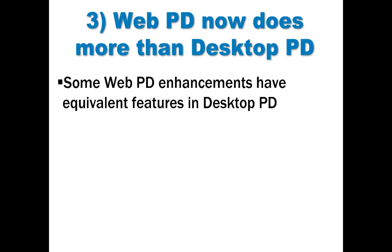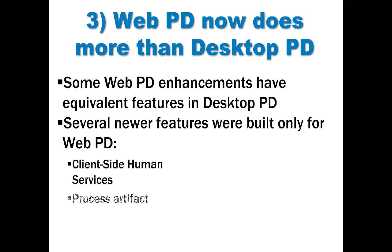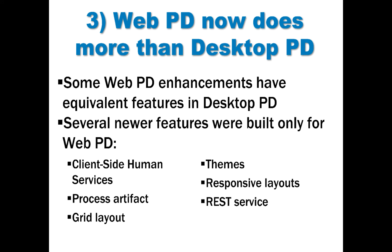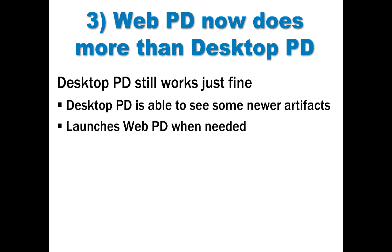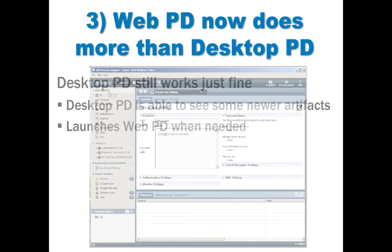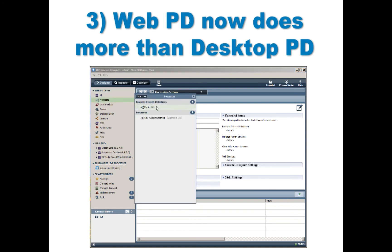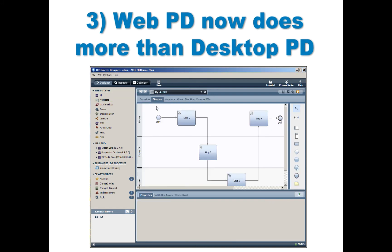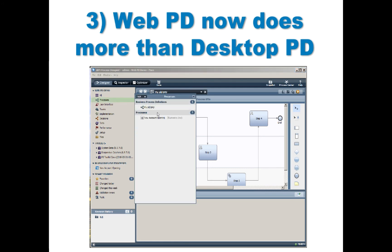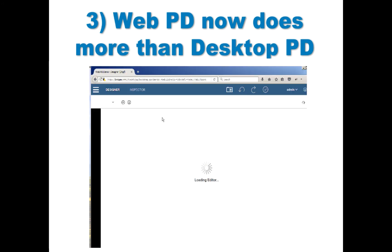Some of the enhancements to the web PD have equivalent features in desktop PD. On the other hand, there are several features that are brand new to BPM and are only available in the web PD. Meanwhile, the desktop PD still works just like it always has — it can also see some of these newer artifacts and launch the web PD when needed. Here I am in the desktop PD: I have an old BPD that launches in the desktop PD, and a newer process artifact that launches in the web PD.